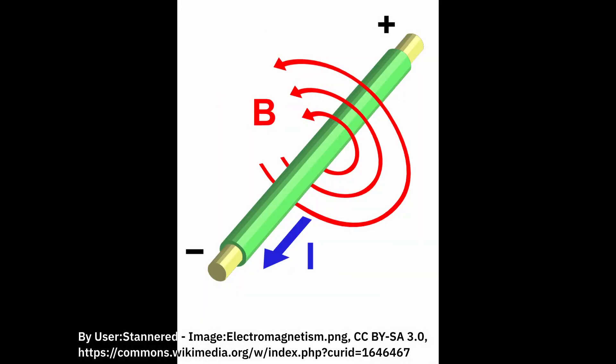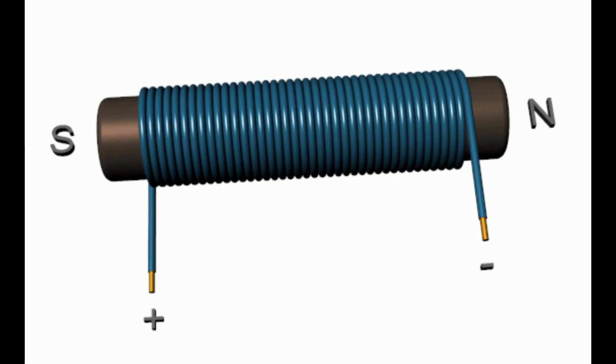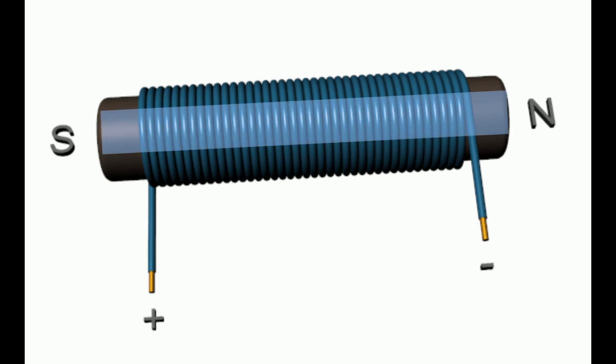Electromagnets solve this by using the fact that all current-carrying wires produce a magnetic field. A coil of wire, or solenoid, uses many small coils which each create small, weak magnetic fields. This way, they can create a larger overall field when coiled together. A ferromagnetic core, typically made out of iron or an iron-containing material, is used to increase the strength of the electromagnet. This is how an electromagnet works.